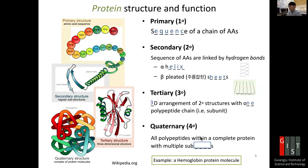A good example of quaternary structure is the hemoglobin protein molecule, which has four subunits. Hemoglobin carries oxygen in our body — it's a red molecule and one of the most important functional proteins in blood.